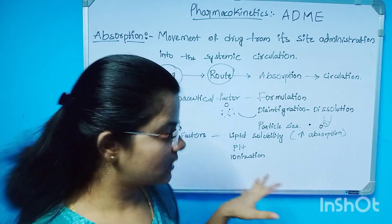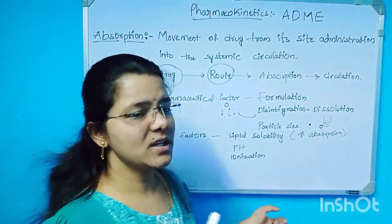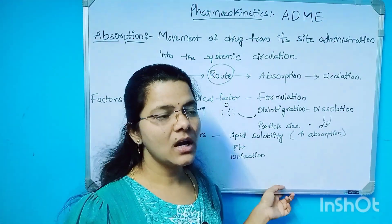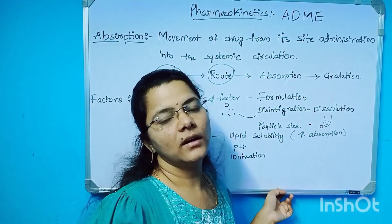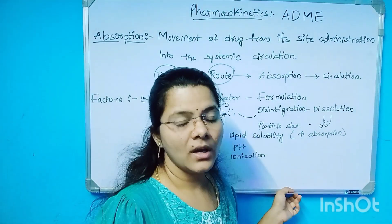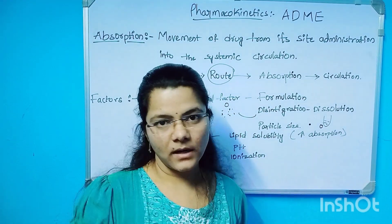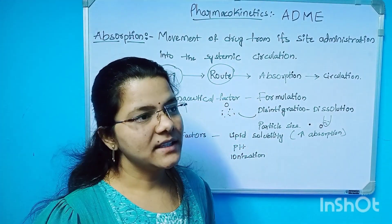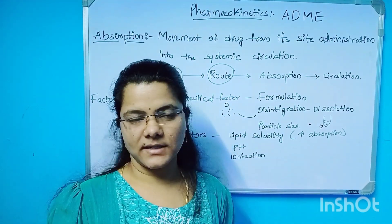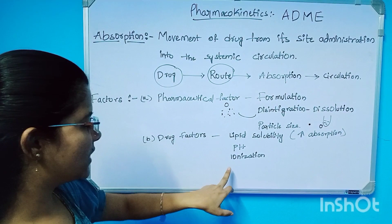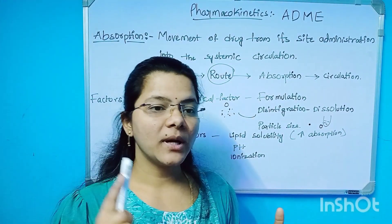pH also affects absorption. pH involves acidic medium and basic medium. The acidic medium is absorbed in the acidic medium — acidic drugs are absorbed in the stomach. The basic medium is absorbed in the intestine. Ionization is also a factor that affects absorption in the body.